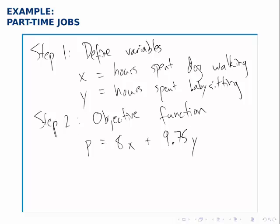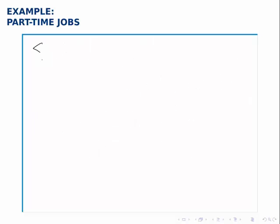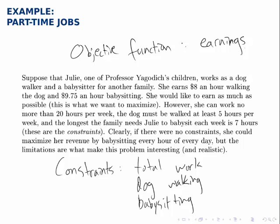Once we've got the objective function, we'll set it aside until nearly the end of the problem. Most of the problem is spent working with the constraints. We'll define the constraints, draw a picture to represent them, and then eventually come back to the objective function. So now step 3 is to find and describe the constraints. We have these three constraints: the amount of total work she can do is constrained, the amount of dog walking is constrained, and the amount of babysitting is constrained. The total work constraint says that the combination of hours spent dog walking and hours spent babysitting cannot exceed 20.